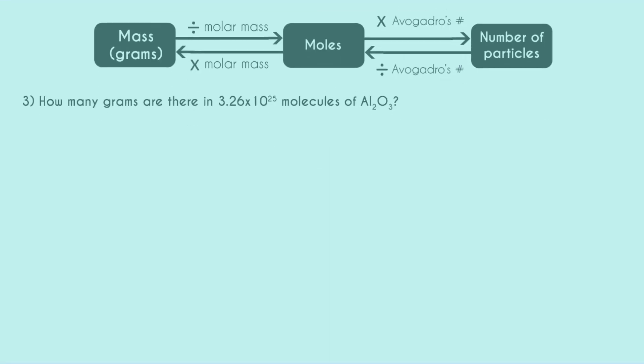Next, I'm asked how many grams are there in 3.26 times 10 to the 25 molecules of Al2O3. So I'm given my number of particles, that's my start. I'm asked for the number of grams, this is my finish. And this is my first two-step conversion problem. All that means is that I have to first convert from number of particles to moles by dividing by Avogadro's number. Then I'll have moles, which will be my halfway point. And then to get to grams, I'll have to multiply by the molar mass.